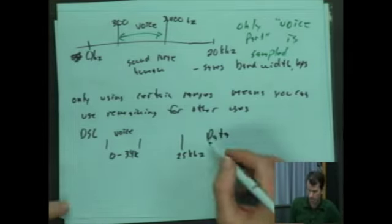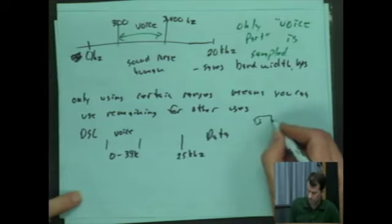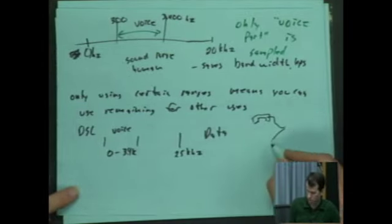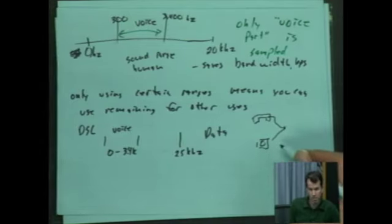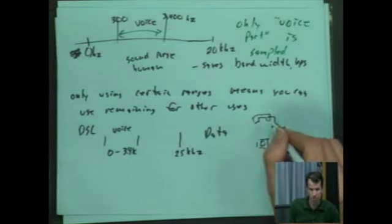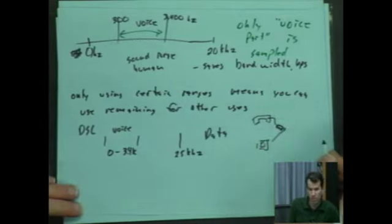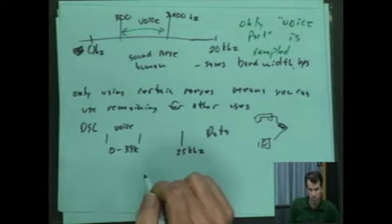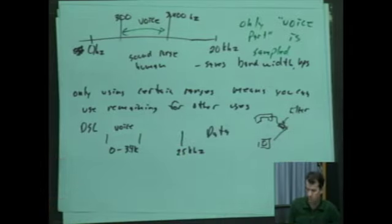And I used to have DSL, and they actually gave you a little filter. So you had your phone, and if you had your phone plugged into the same place as your computer, you'd hear this high-pitched scream in your phone. So the phone company gave you a little filter that you put on your phone that would only allow these voice ranges through. That's DSL. That's why they do things like that with your voice.